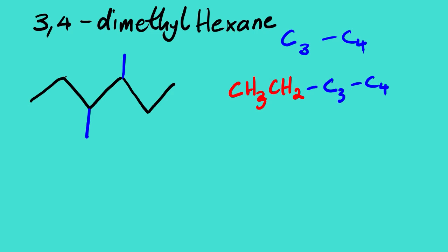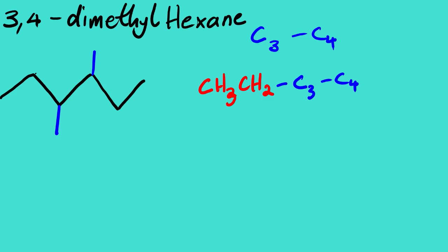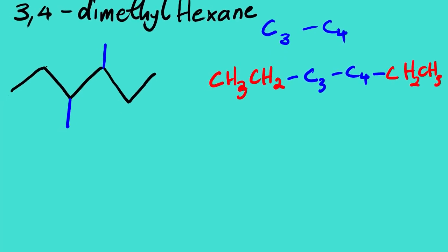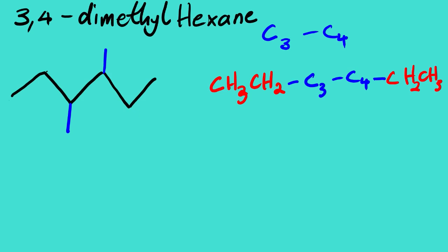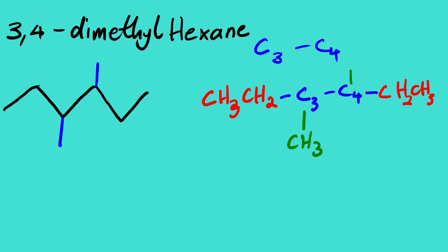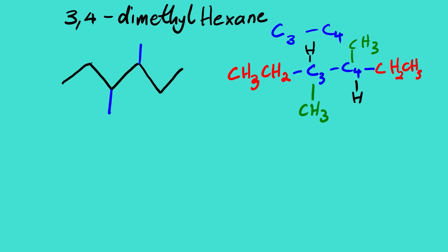Carbon number three and carbon number four are bonded to each other. Carbon four is bonded to CH2CH3. Carbon three has a methyl group, carbon four also has a methyl group, and the remaining bonds on each are simply hydrogens. So how do we draw the Newman projection for this along C3 and C4?